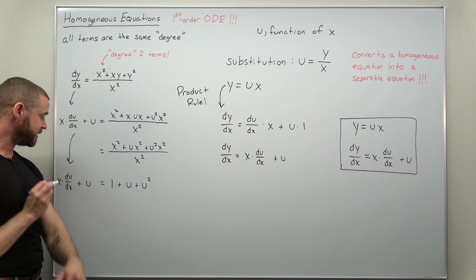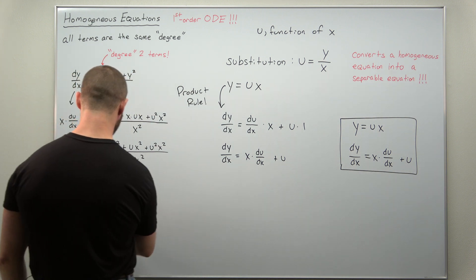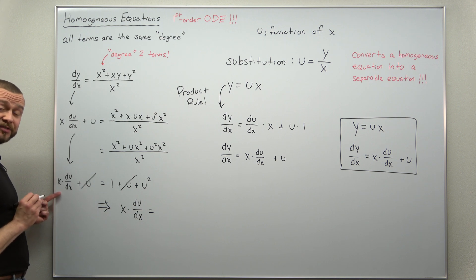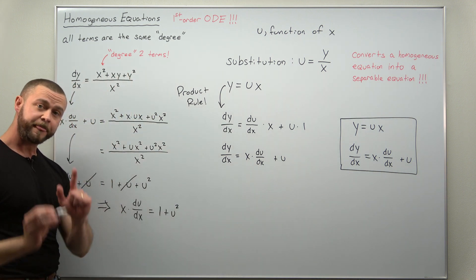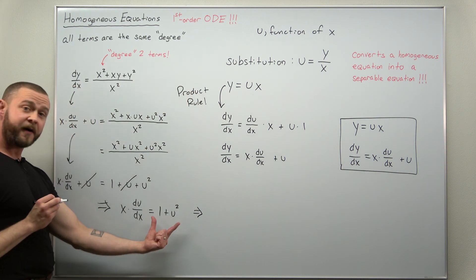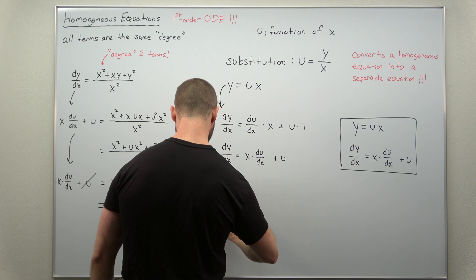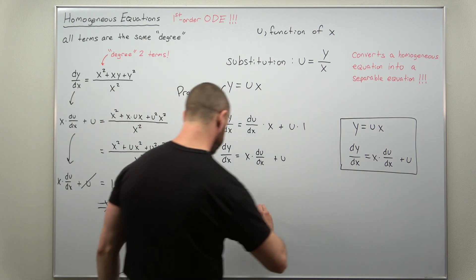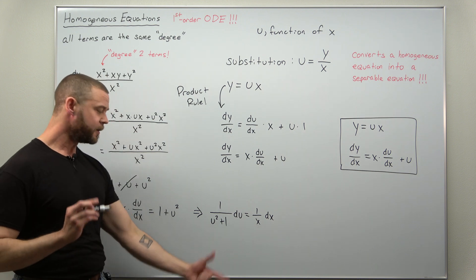On the left side we keep x times du over dx plus u. Notice what's nice about this example: you can cancel the u terms on both sides. What we get is a very simple differential equation: x times du over dx equals 1 plus u squared. From here this is now very simple to separate. Dividing: 1 over (u squared plus 1) du equals 1 over x dx. That is separable, and you can solve it by integrating both sides.